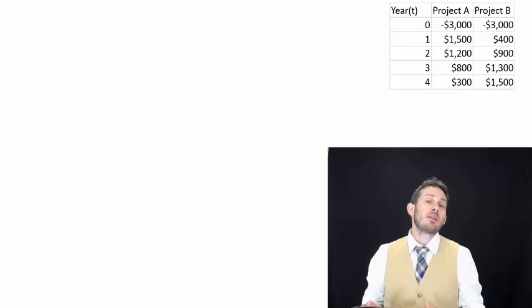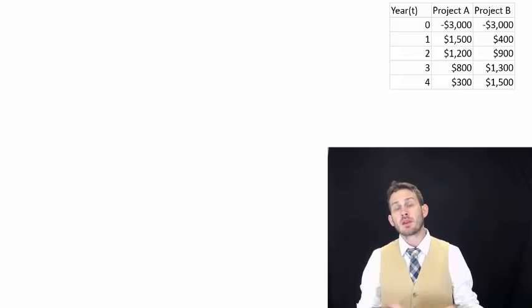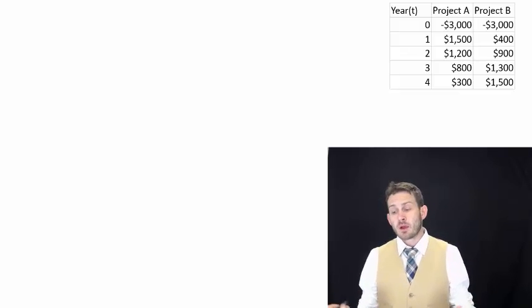Now looking at the same data that we worked with the NPV project, we have project A and project B. We came up with NPVs on them before, and we had basically a decision about which project we wanted to do. Now, we can also look at this using the IRR rule.